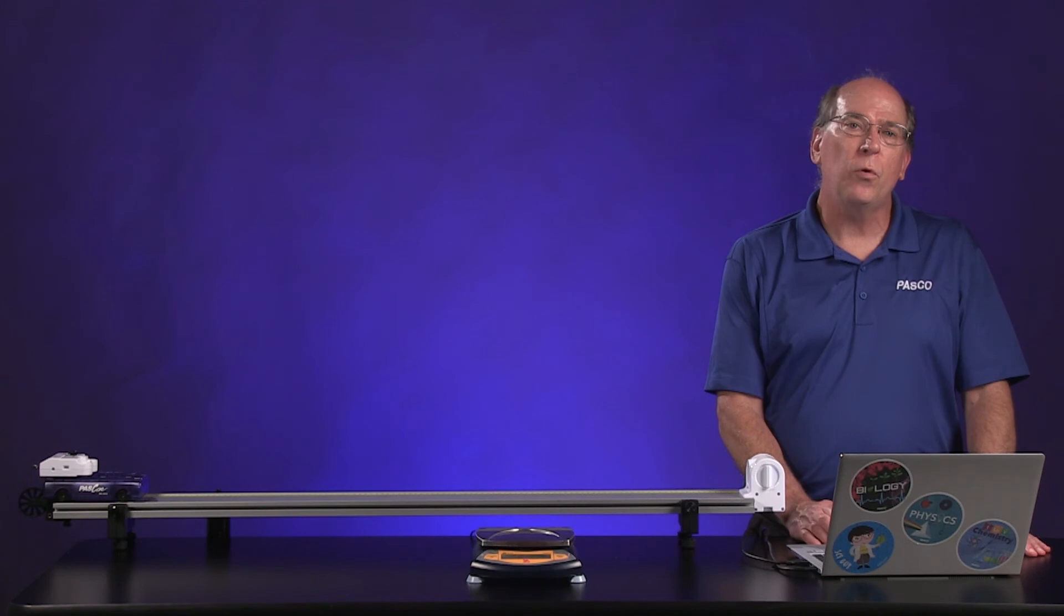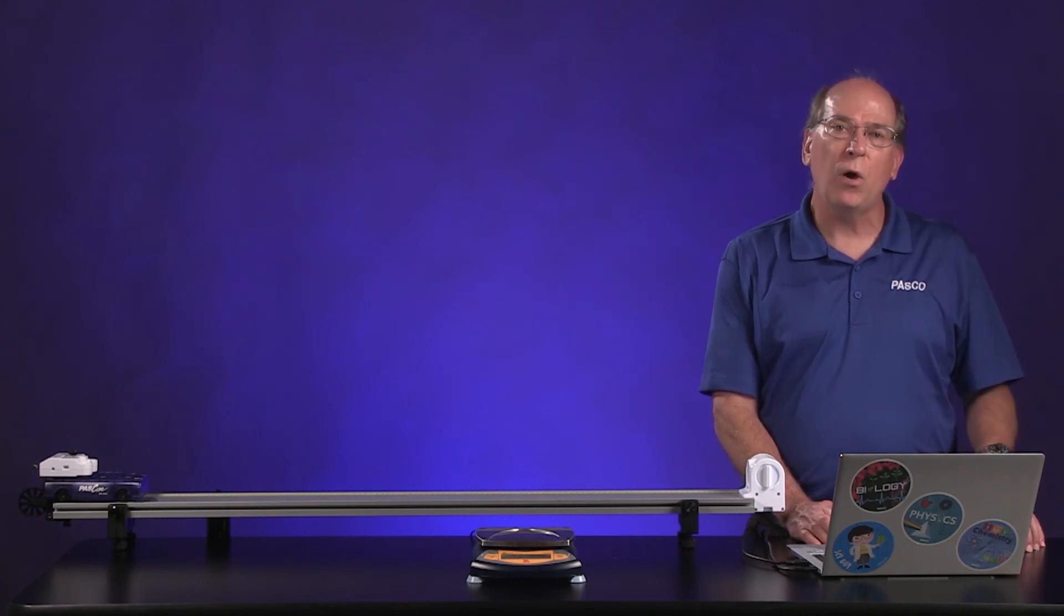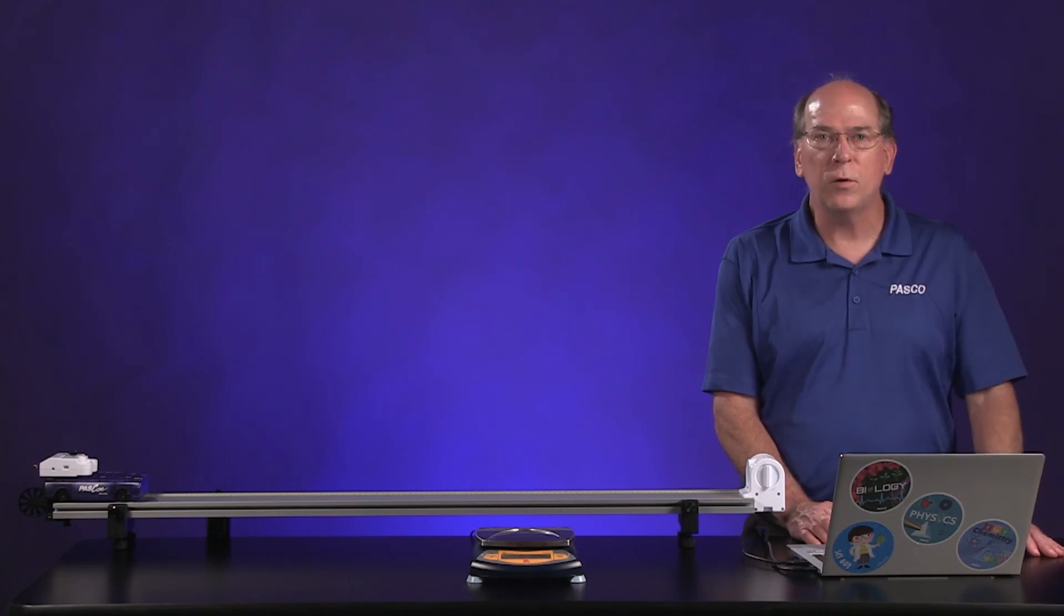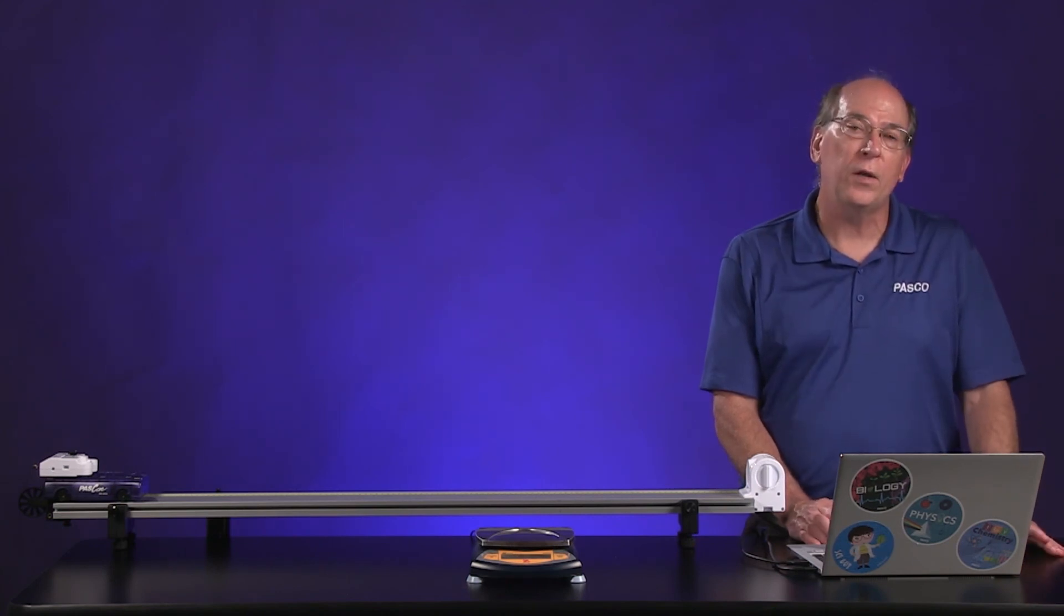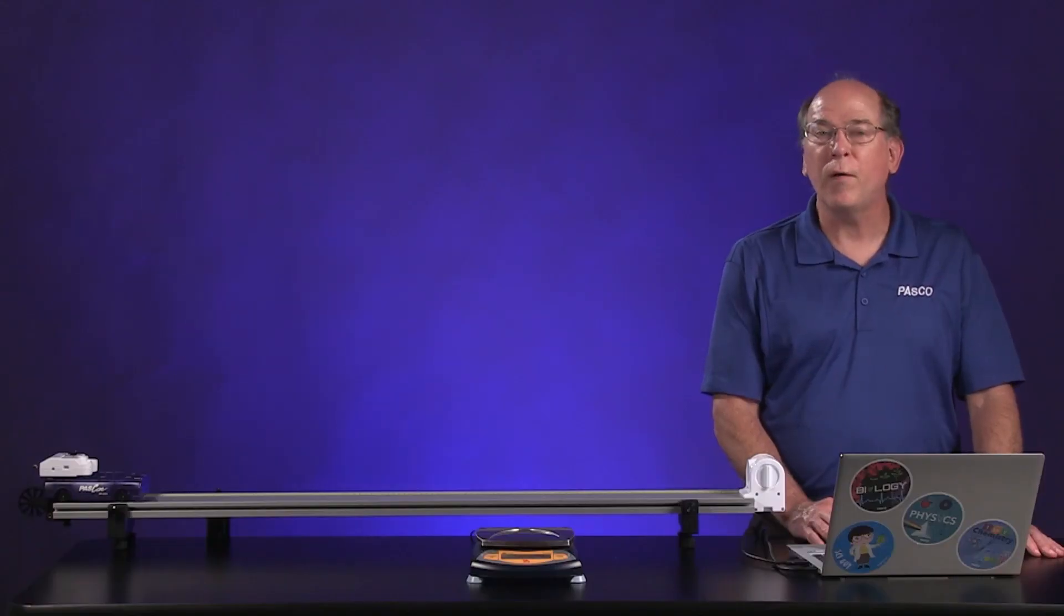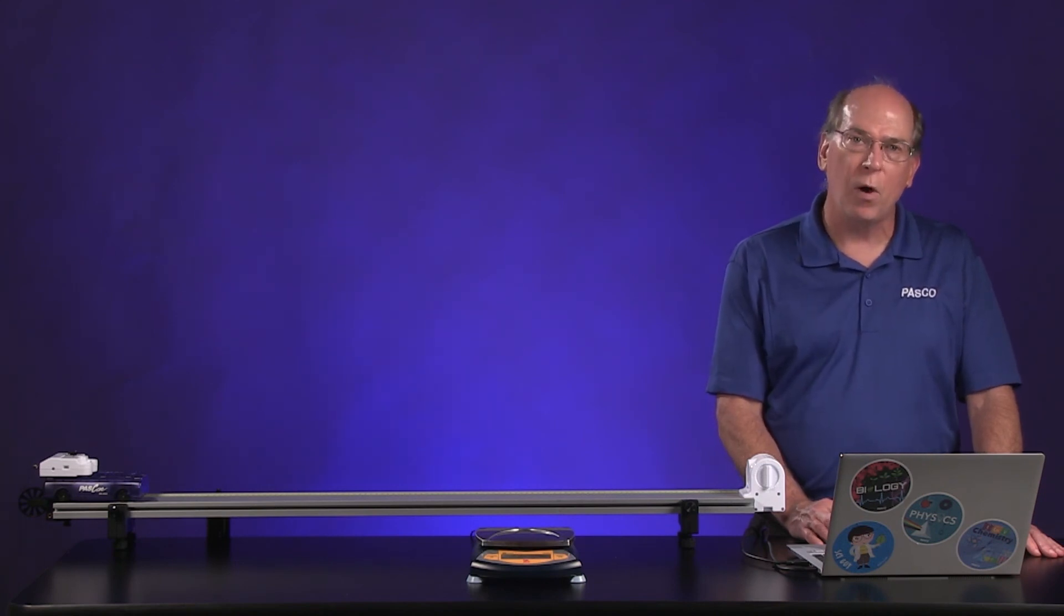Now that we understand that, we can use the multi-coordinate tool to find the velocity of the cart at each of the positions that correspond to the different distances in the data table in the lab. So here's the multi-coordinate tool, for example. And so find the position where it's gone 0.05 meters, and then record that velocity. Then when it's gone 0.1, 0.15, and so on.